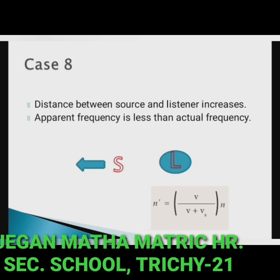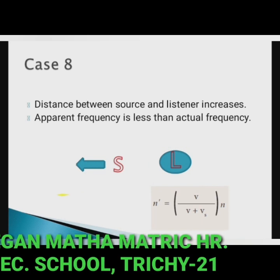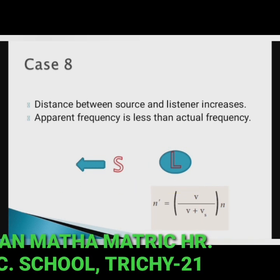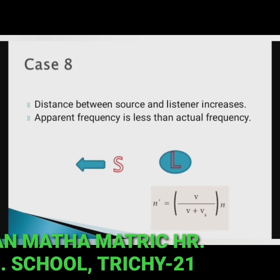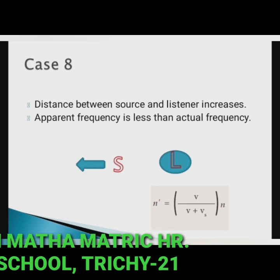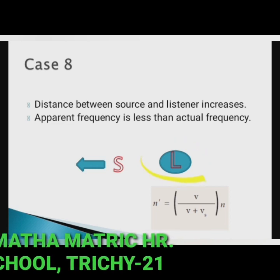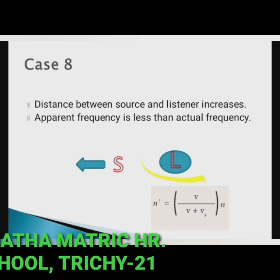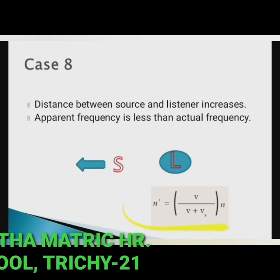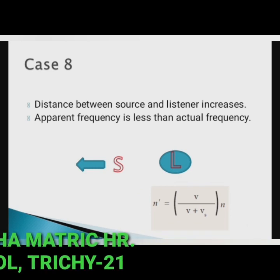Case 8 — listener at rest, source moves away from the listener. The distance between source and listener increases, so the apparent frequency is less than the actual frequency. Since the listener is at rest, Vl = 0, and the expression is: n' = V / (V + Vs) × n.